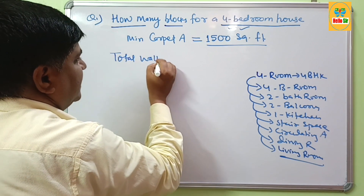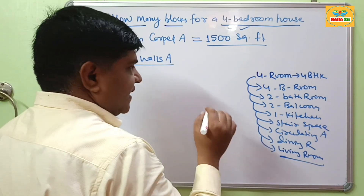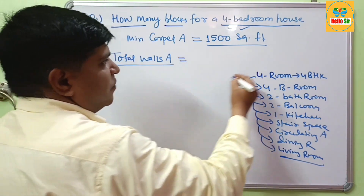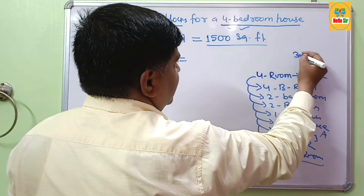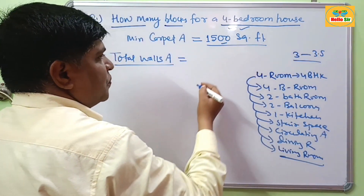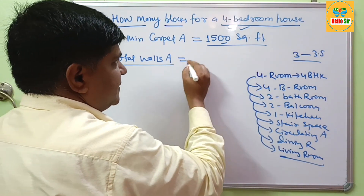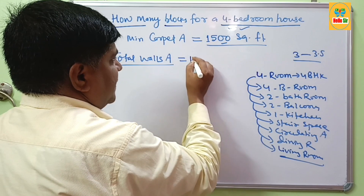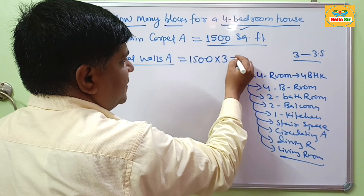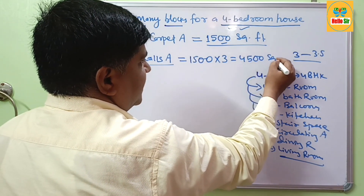Total walls area includes both exterior walls and interior walls. You can use a thumb rule: multiply your carpet area by 3 to 3.5 to get the total walls area. If your carpet area is 1500 square feet, multiplying by 3 gives 4500 square feet.